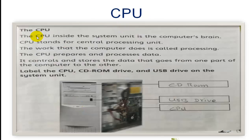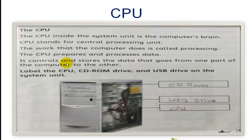CPU. The CPU inside the system unit is the computer's brain. CPU stands for Central Processing Unit. The work that the computer does is called processing. The CPU prepares and processes data. It controls and stores the data that goes from one part of the computer to the other.